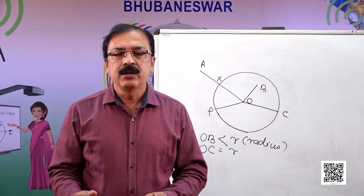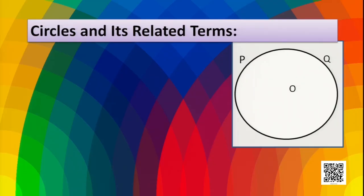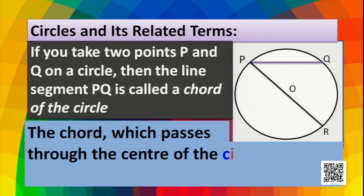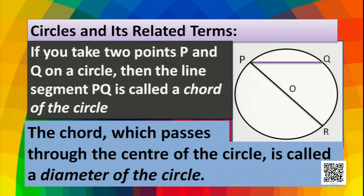Now let's take two points P and Q on the circle. The line segment PQ is called a chord of the circle. A chord is a line segment joining two points on the circle. If we consider another chord which passes through the center O, then that chord is called the diameter of the circle.